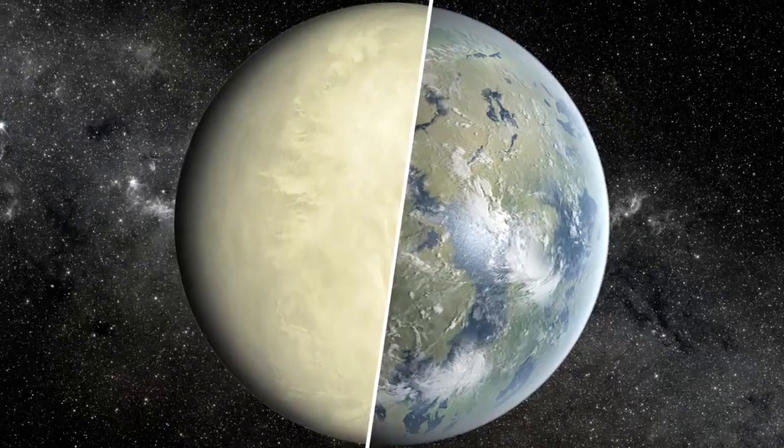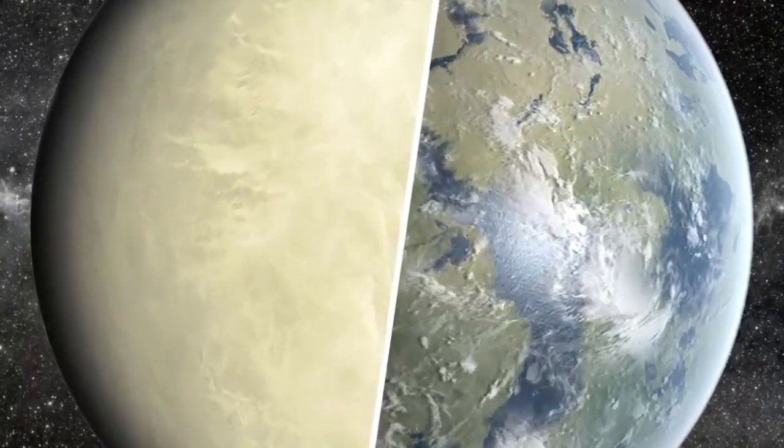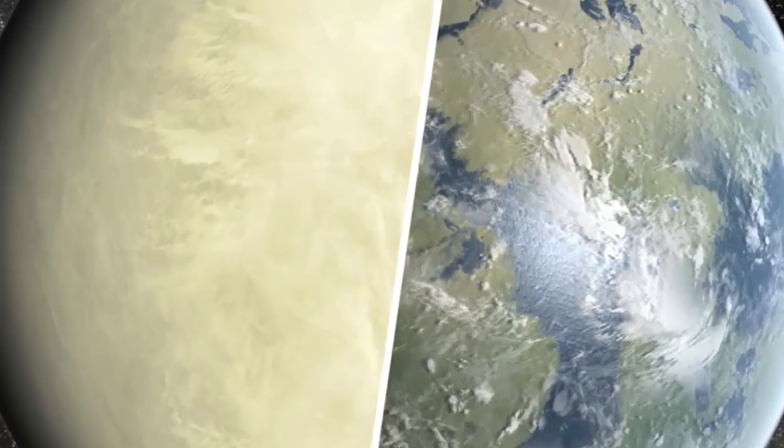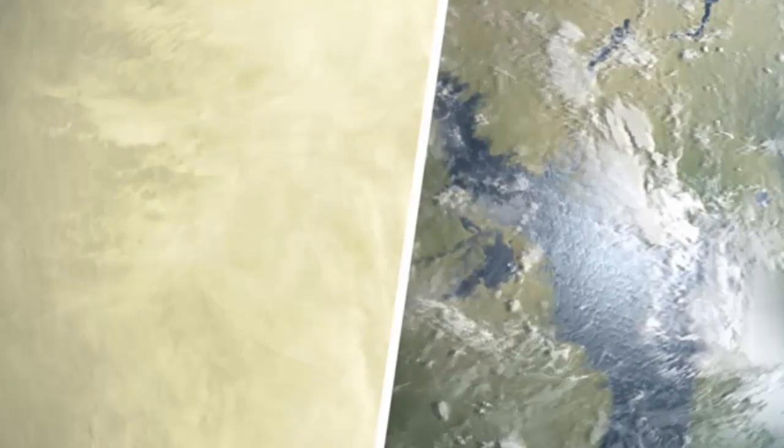What we know about Venus for now is that it lacks water. Scientists believe there was water 1 billion years ago or so, but it's just a theory. There are traces of water of course.